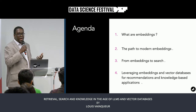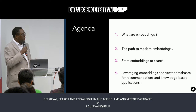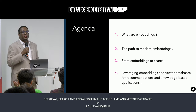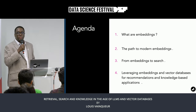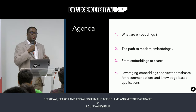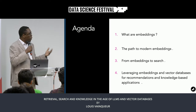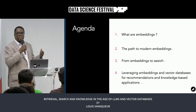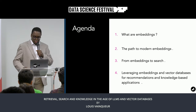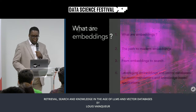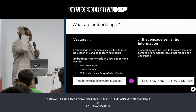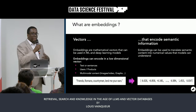Then we'll have a path between embeddings and search. Later on we'll talk about more intelligent applications: RAGs, recommendation systems, and advanced search. What are embeddings? Really, the embeddings are vectors.